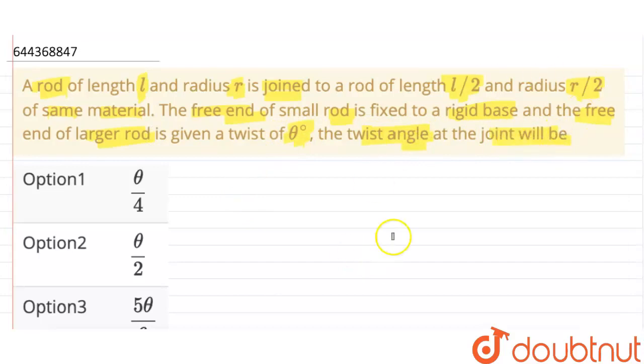Alright, so we need to find the twist angle at the joint given that the material is same. So we know that c dot theta is equal to constant.